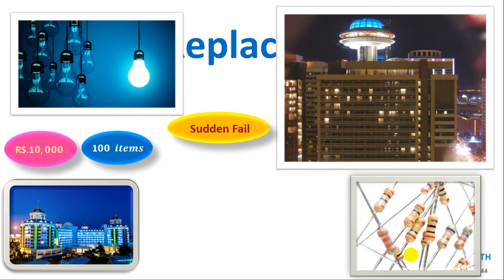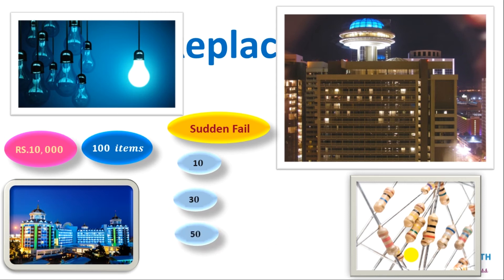Now there is a sudden fail scenario. In the first month or first year, say 10 items fail. In the second period, 30 fail. Then 50 fail. So every month there are failures and we have to account for them.